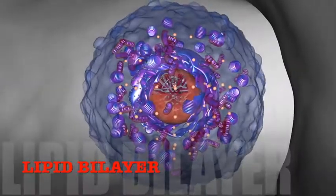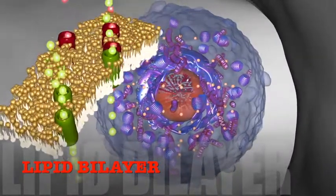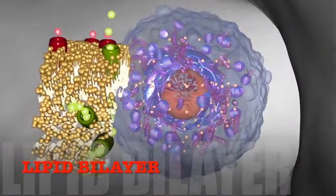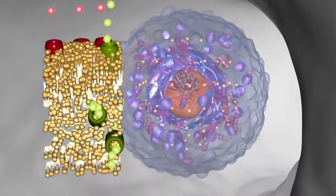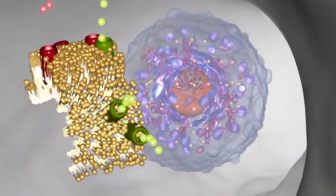The membrane of the cell is a lipid bilayer. Molecules can diffuse across this membrane directly or via channel proteins embedded within it.